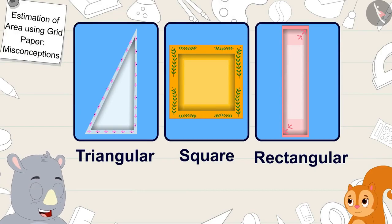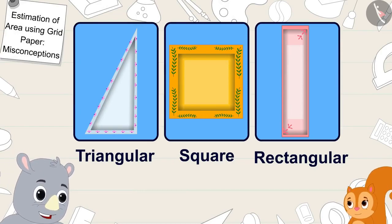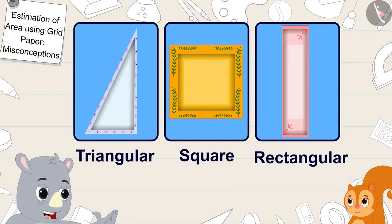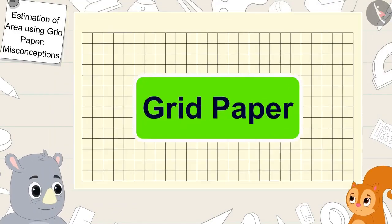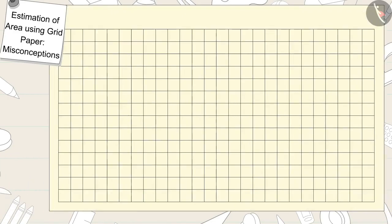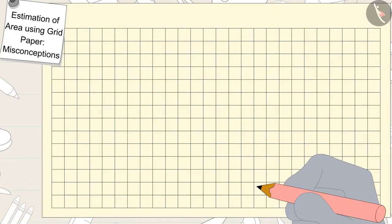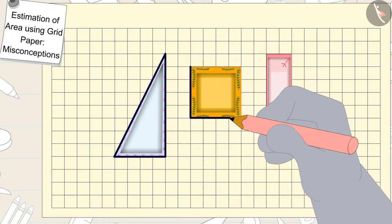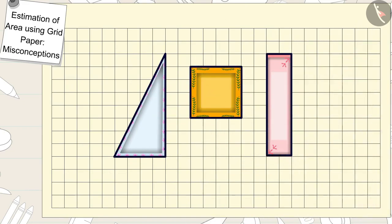Gaggoo laughed and said, no Chanda, come let me explain this to you using this grid paper. After saying this, Gaggoo used a pencil to trace the outlines of the three plates onto the grid paper.